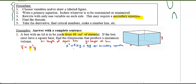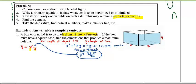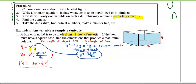Solve the secondary equation for y: y equals (48 minus x squared) over 4x. Now substitute back into the primary equation. V equals x squared times (48 minus x squared) over 4x. Simplifying: 48 divided by 4 is 12, giving 12x, and x to the power of 4 over x is x cubed. So V equals 12x minus one-quarter x cubed — one variable on each side.